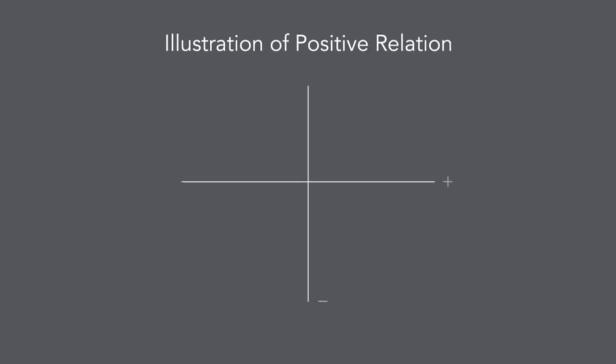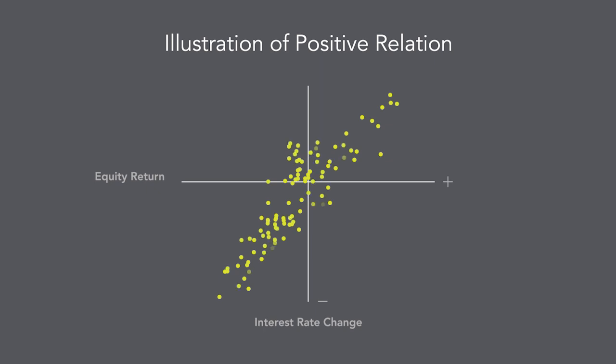If there were a strong relation between equity returns and interest rate changes, we would expect a clear pattern when plotting the data points. Shown here is an example that illustrates a positive relation between the variables. However, the relation based on actual data is much noisier than this.